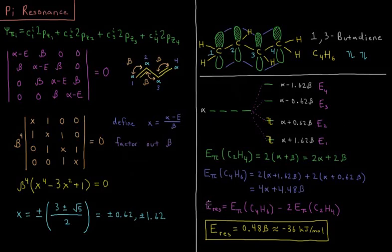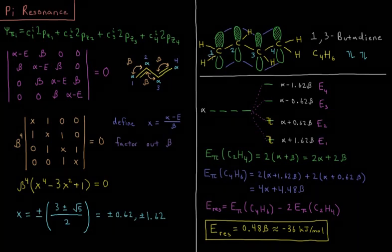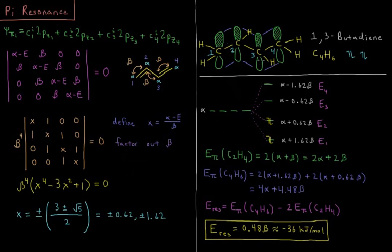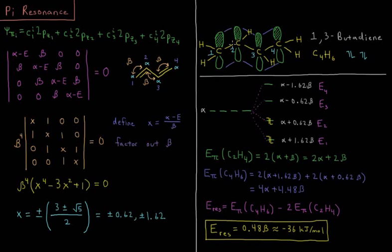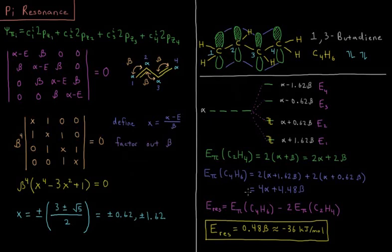The resonance energy of this molecule is going to be the difference in energy between its pi system and two isolated pi bonds that we saw from ethylene. So twice of 2 alpha plus 2 beta is 4 alpha plus 4 beta. Subtracting that from 4 alpha plus 4.48 beta, we get that our resonance energy is going to equal 0.48 beta, which when we take into account that beta is about minus 75 kilojoules per mole, we get a resonance energy of minus 36 kilojoules per mole.